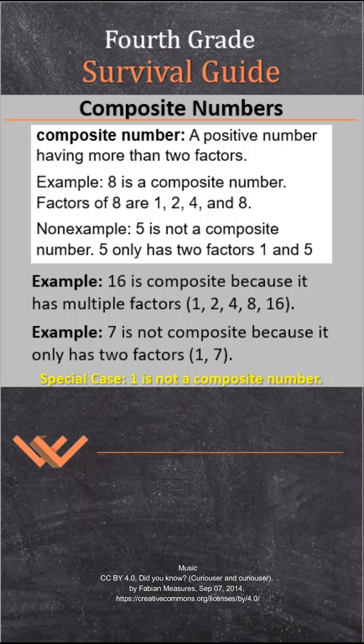Hi fellow mathematicians, this is Mr. Woods. Today I'm talking about composite numbers. A composite number is a positive number having more than two factors.